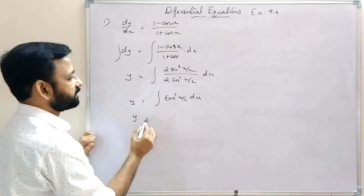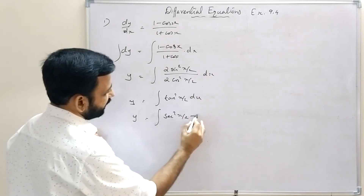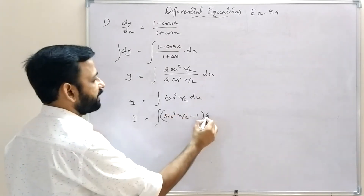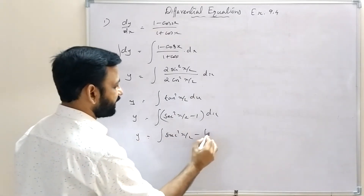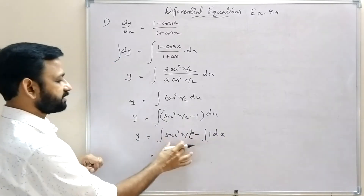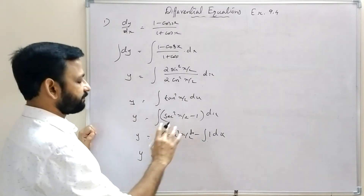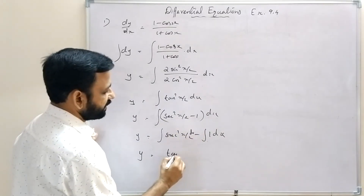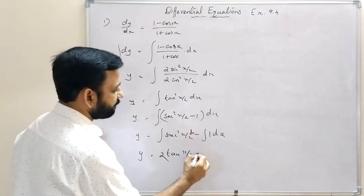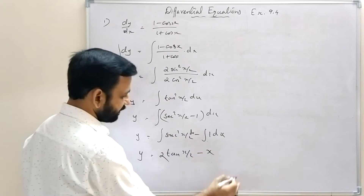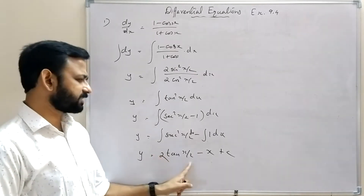Using tan²θ = sec²θ - 1, we get y = integral sec²(x/2) dx - integral 1 dx. The integral of sec²(x/2) is tan(x/2) divided by (1/2) = 2tan(x/2). So y = 2tan(x/2) - x + c. This is the general solution of dy/dx = (1 - cos x)/(1 + cos x).